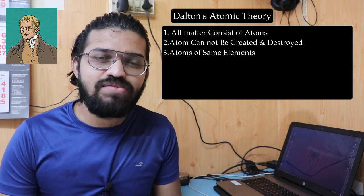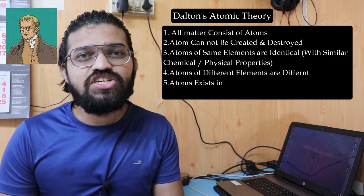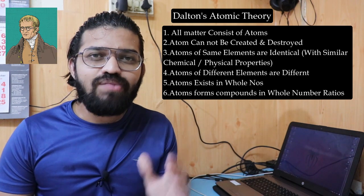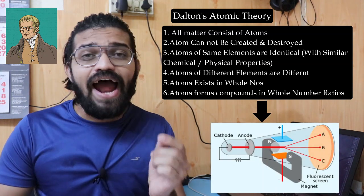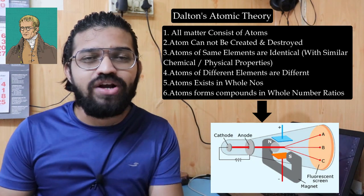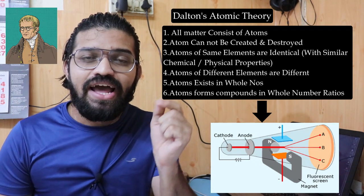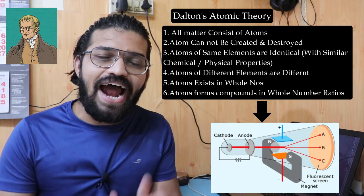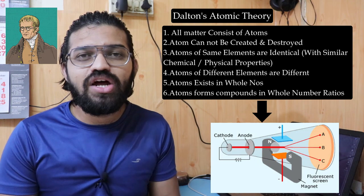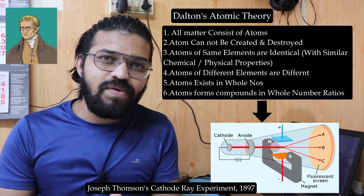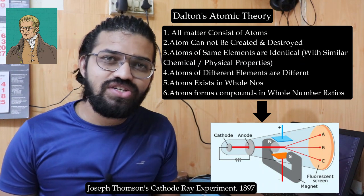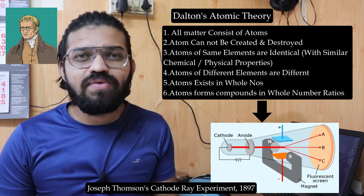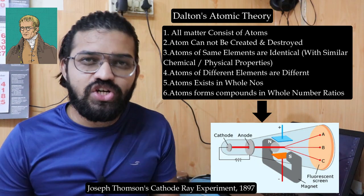These are the six points postulated by Sir John Dalton in 1808. In this video we learned about Dalton's Atomic Theory. Later, in 1879, J.J. Thomson conducted the cathode ray experiment and found that atoms are not the endpoint — atoms can be further divided and contain particles within them. In the next video, we will learn about J.J. Thomson's cathode ray experiment. Thank you for watching Ingenious Academy.